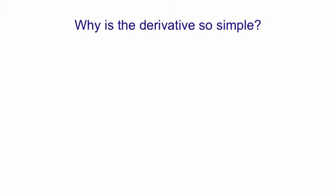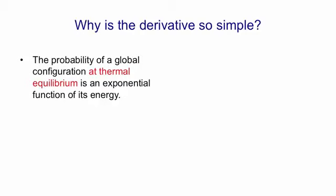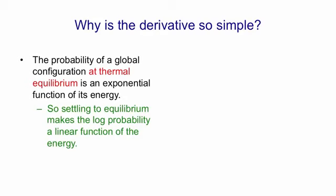One obvious question is why is the derivative so simple? Well, the probability of a global configuration at thermal equilibrium, that is once you've let it settle down, is an exponential function of its energy. The probability is related to e to the minus energy. So when we settle to equilibrium, we achieve a linear relationship between the log probability and the energy function.